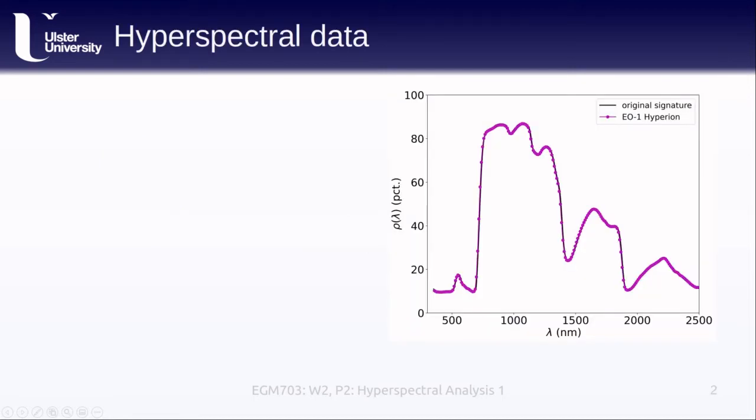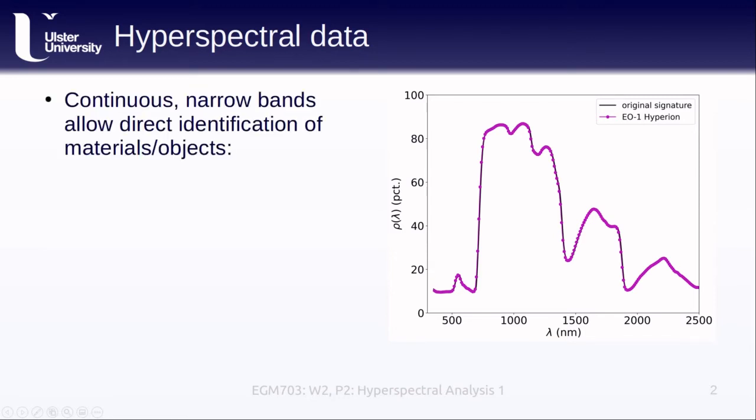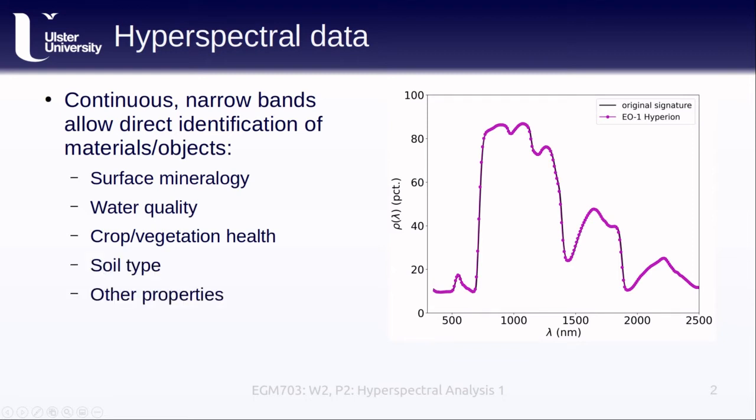Along with some of the methods that we can use to analyze it. Remember that hyperspectral sensors, or instruments, are characterized by narrow, continuous bands. The resulting images can be used to create spectral signatures that we can use to directly identify surfaces or materials. Some of the applications that we can use these images to study are surface mineralogy, water quality, crop or vegetation health, soil type, or other properties.